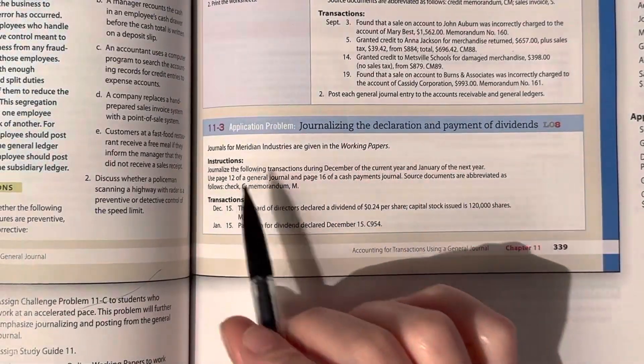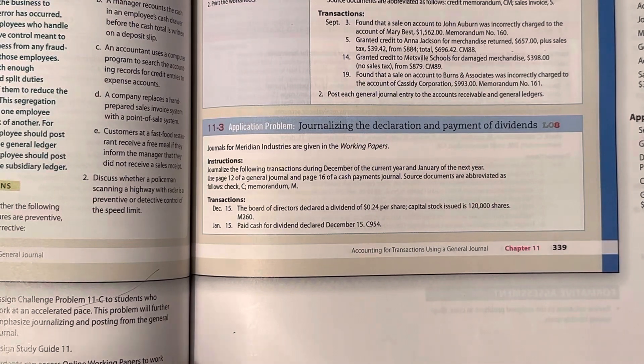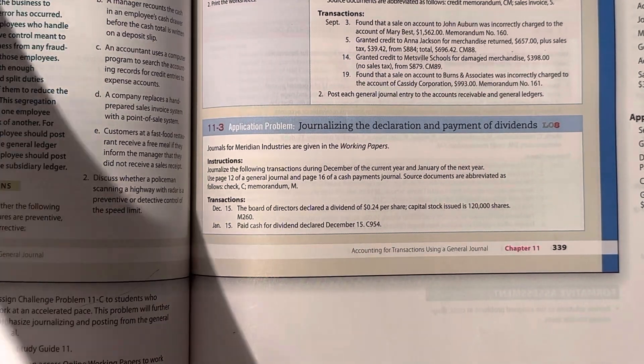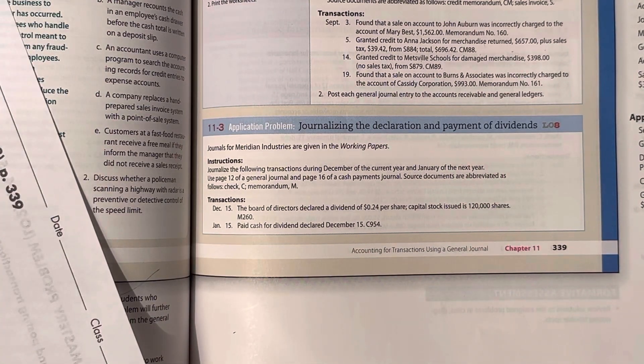Hey guys, today we're going to do application problem 11.3. It says, journals for Meriden Industries are given in the working papers. Journalize the following transactions during December of the current year.